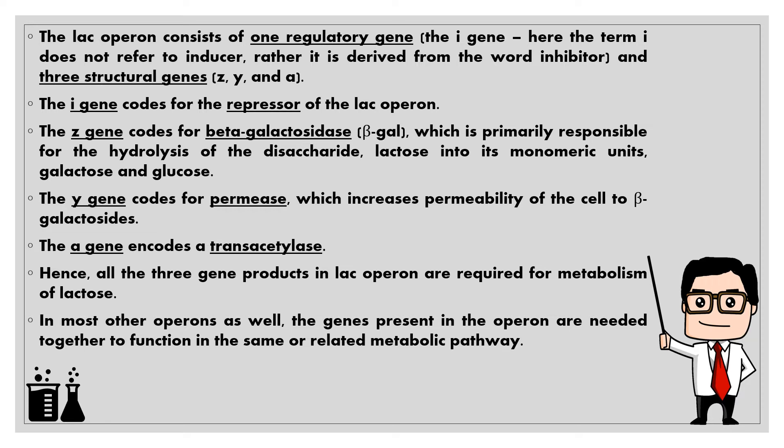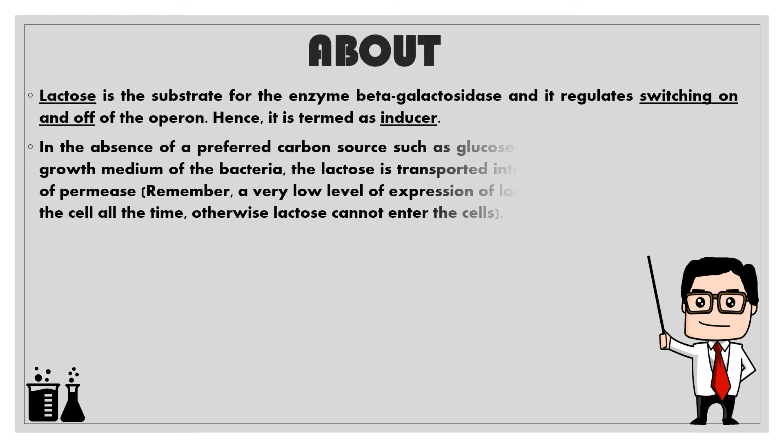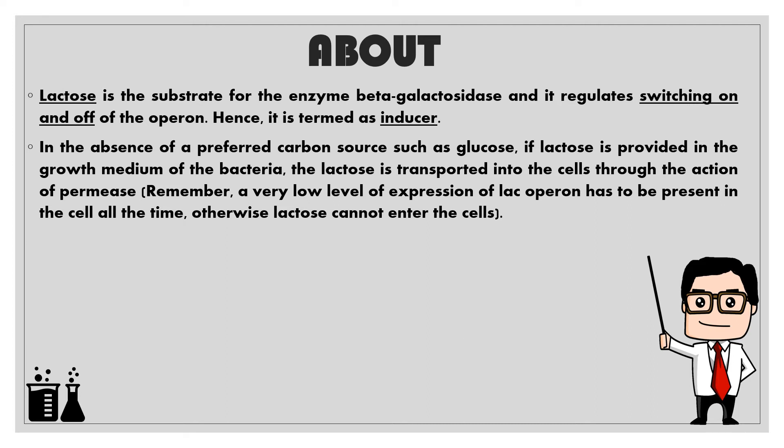In most other operons as well, the genes represented in the operon are needed together to function in the same or related metabolic pathway. Lactose is the substrate for the enzyme beta-galactosidase and it regulates switching on and off of the operon, hence it is termed the inducer. In the absence of a preferred carbon source such as glucose, if lactose is provided in the growth medium of the bacteria, the lactose is transported into the cells through the action of permease.